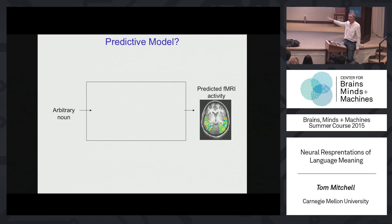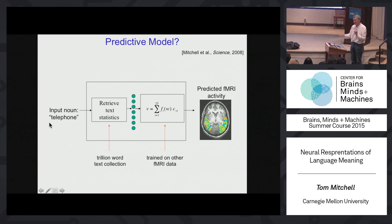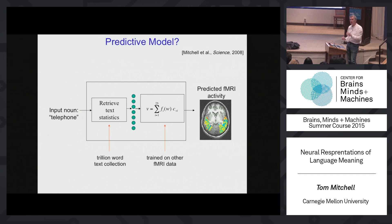We worked on this for a while and came up with our first version. It's a computational model that, once trained, would make a prediction for any input word like 'telephone' in two steps. In step one, given a word like 'telephone,' it would look up that word in a trillion words of text collected from the web and represent that word by statistics about how 'telephone' is used — specifically, which verbs co-occurred with that noun. In step two, it would use that vector, which approximates the meaning of the noun, as the basis for predicting in each of 20,000 locations in the brain how much activity there will be.